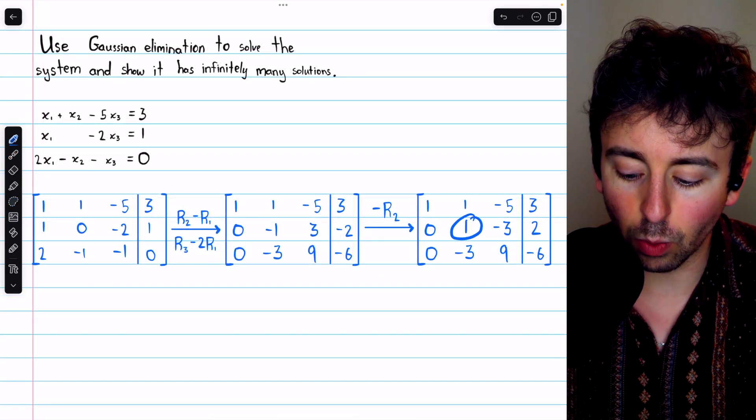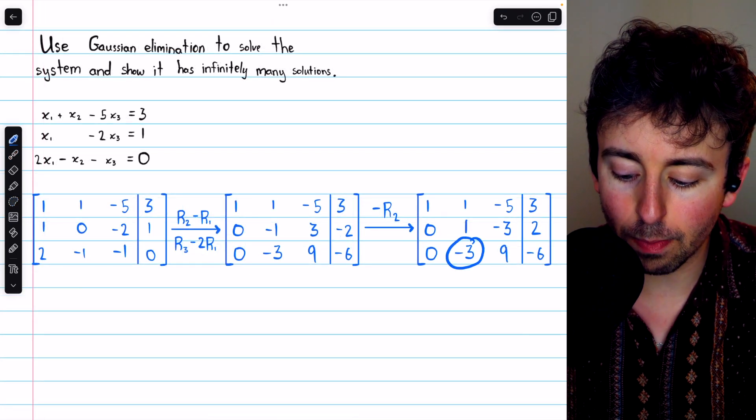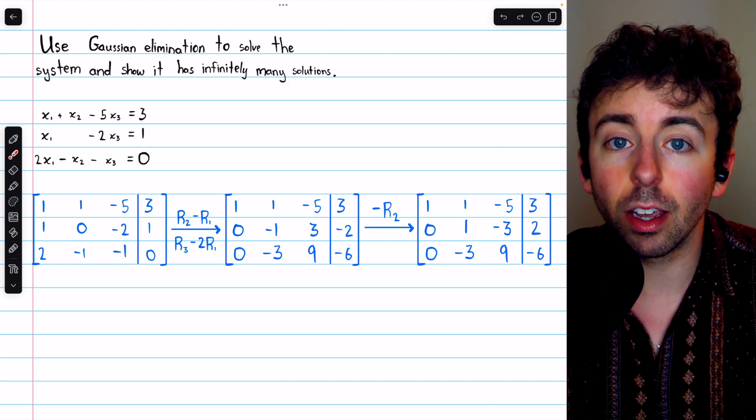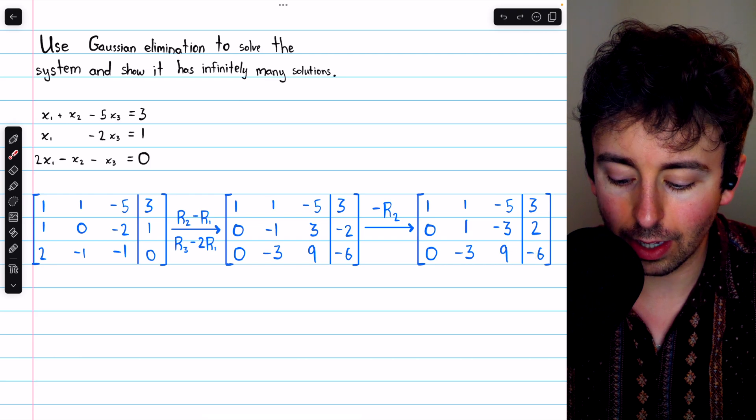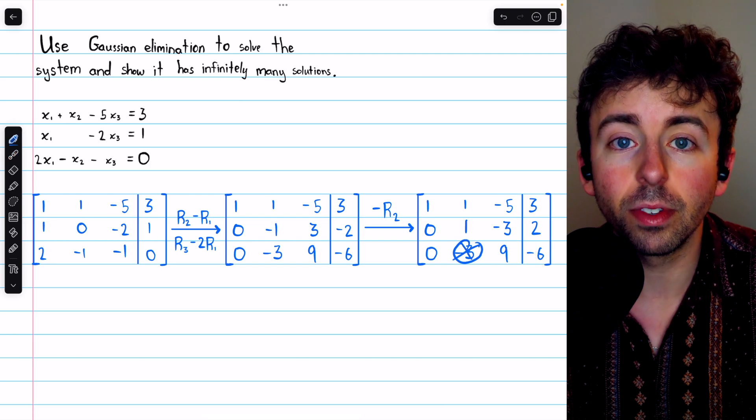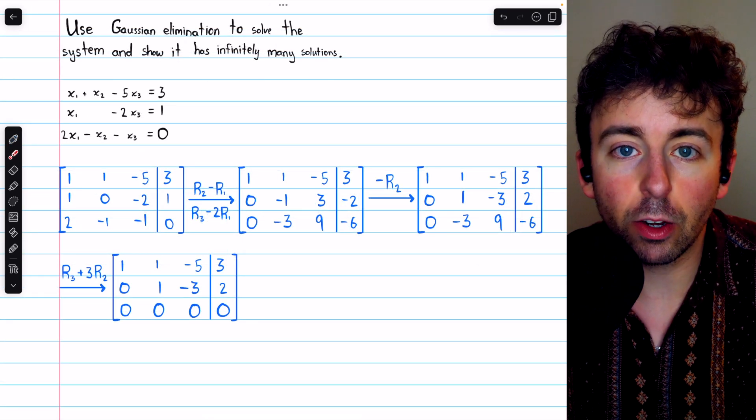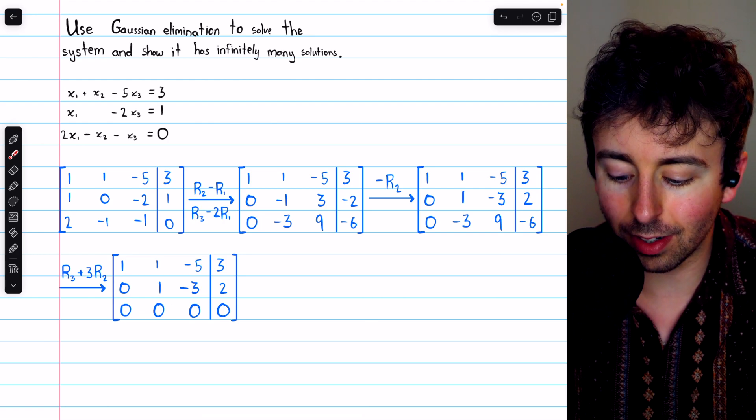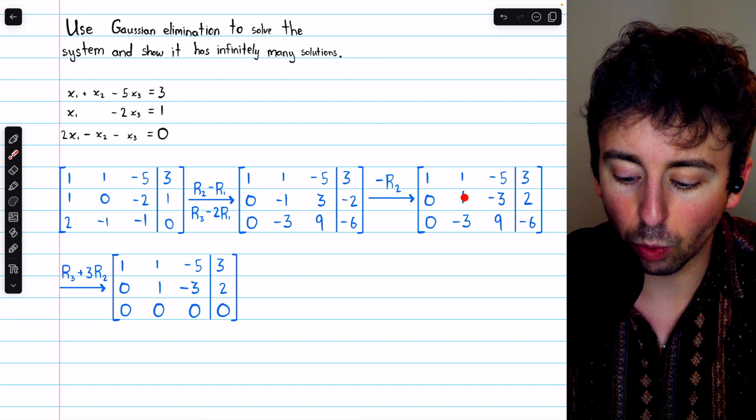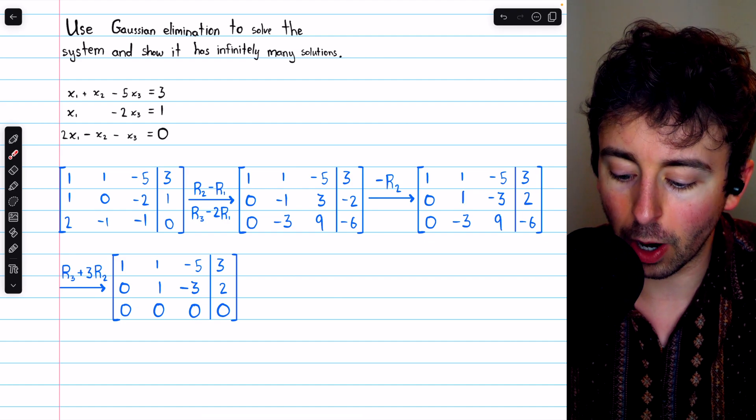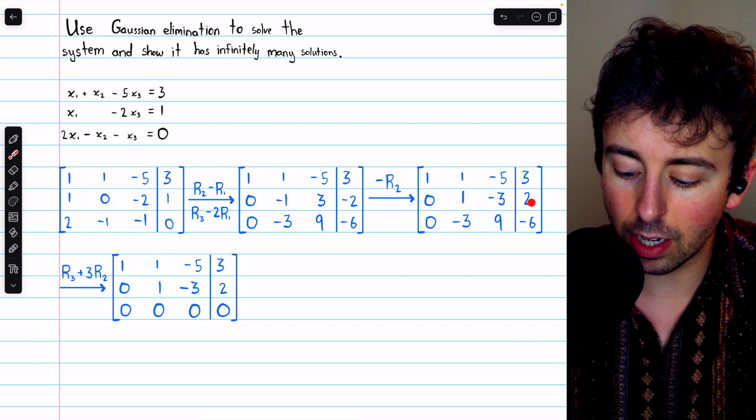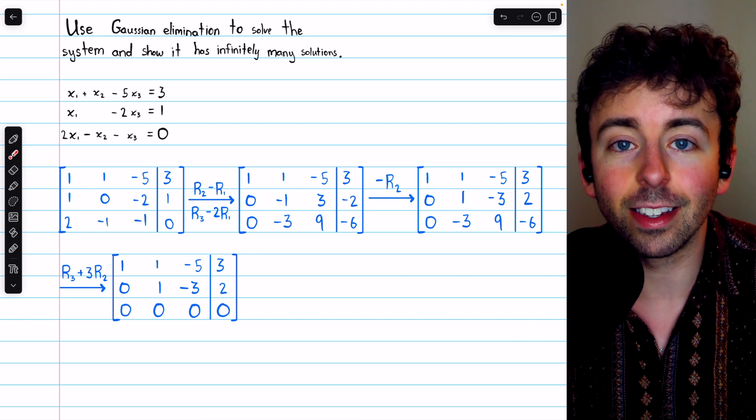Now we have this leading one, and we want this entry below it to be a zero. So we'll add three copies of row two to row three, so that this negative three becomes a zero. That gets us here, and in fact, the matrix is now in row echelon form. The entire third row is now zeros: three times one plus negative three is zero, three times negative three plus nine is zero, and three times two plus negative six is zero.